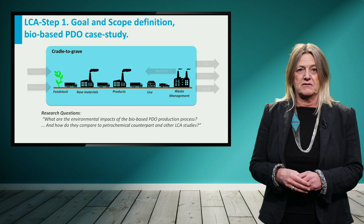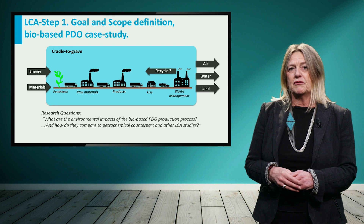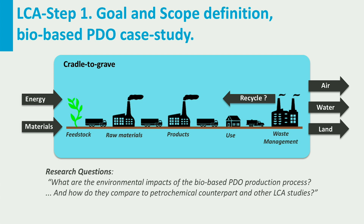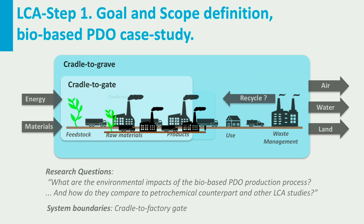Next, the system boundaries are defined. All relevant life cycle stages shall be included as far as possible. For example, a cradle-to-grave system for biobased products covers the extraction and production of all raw materials and energy carriers used in the agricultural phase as well as in the transformation, use and waste management phases. The last two phases are the same for the biobased and for the petrochemical PDO, since the product is chemically identical, and therefore the system boundaries for this lecture can be set as cradle-to-gate.